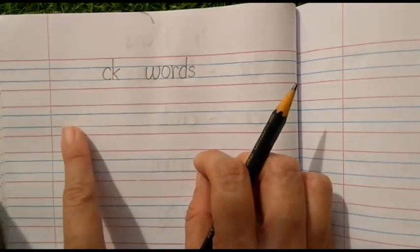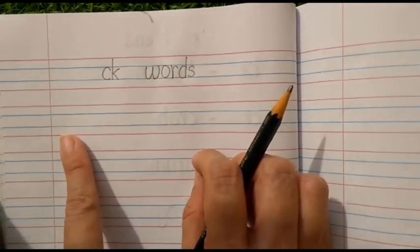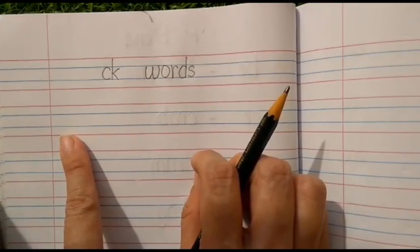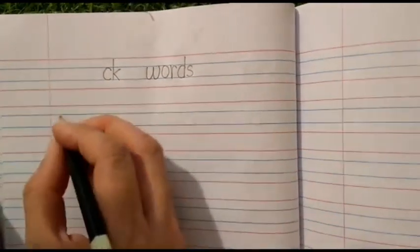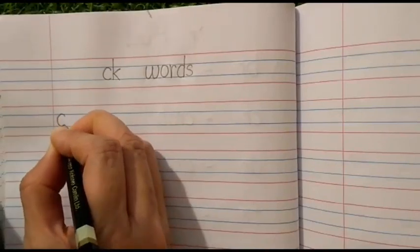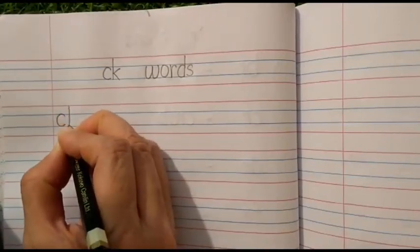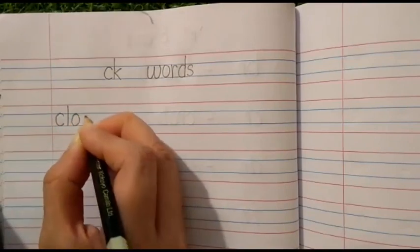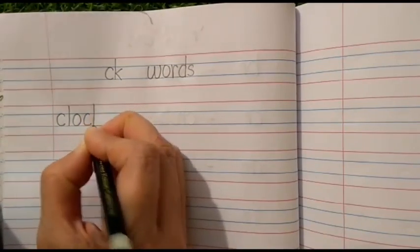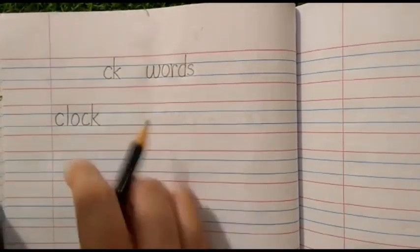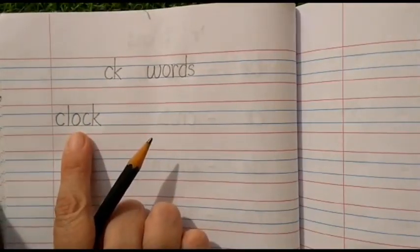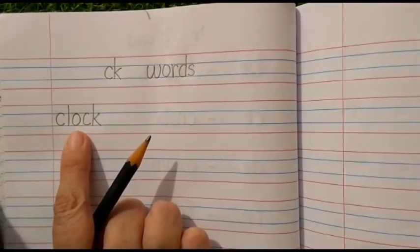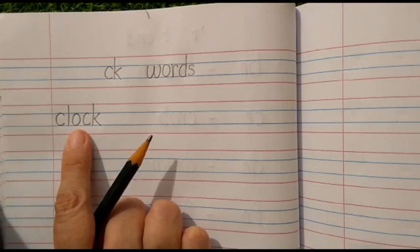Now, next to the margin in the next line, we will start writing the words one after the other. The word is CLOCK. Children, one thing - after writing the word you should say it. Even while writing also, you should say it. Then it becomes easy for you to remember the spellings as well. CLOCK.